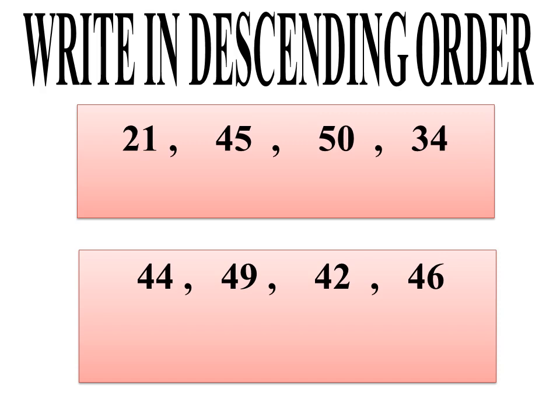How will we arrange them in descending order? Bigger number to smaller number. The answer is 50, 45, 34, and 21. Check the answers, dear. Are the answers correct? Very good.